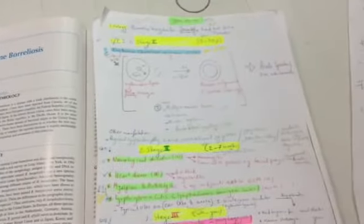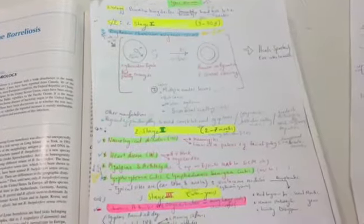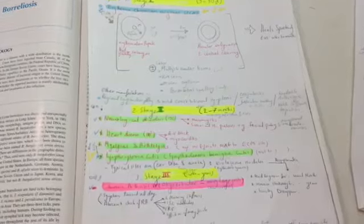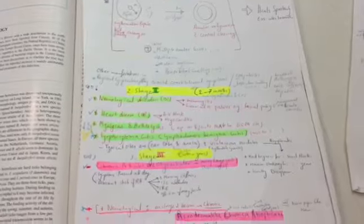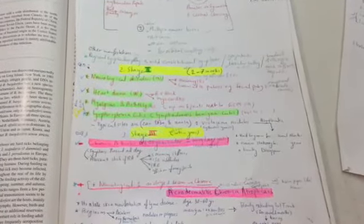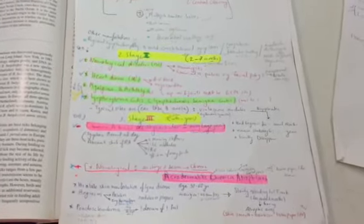There is stage 1, 3 to 30 days, erythema chronica migrans. Stage 2, 2 to 7 months, neurological disorders, heart disease, myalgia, arthritis, lymphocytoma cutis. And stage 3, weeks to years, chronic arthritis, oligoarthritis and chronic neurological symptoms, and acrodermatitis chronica atrophicans.